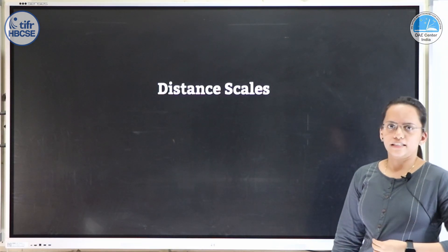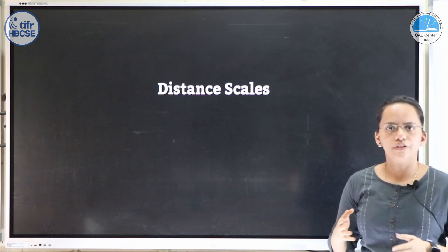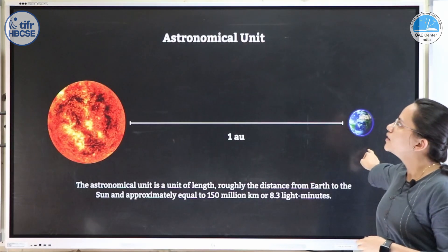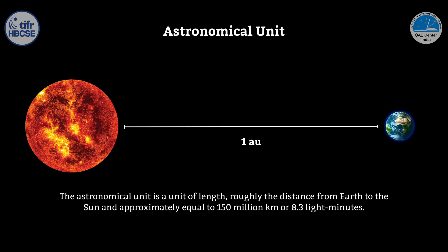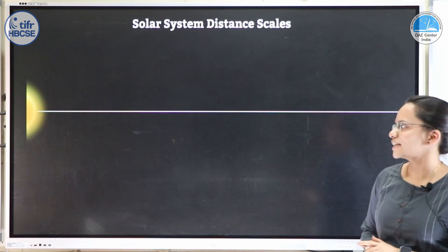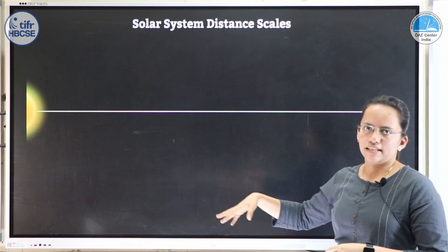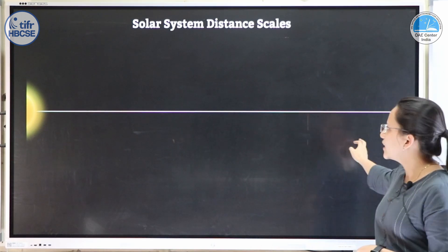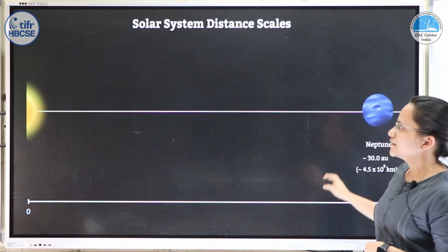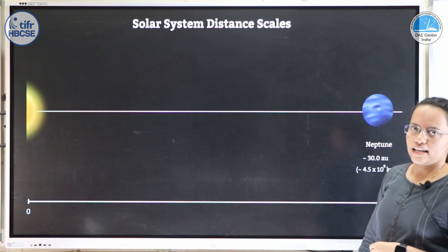Now we come to the distance scale. We have had a rough idea of the sizes of different components in the solar system; now let's see how and where they are situated. The distance between the sun and the Earth is defined as one astronomical unit (AU), approximately equal to 150 million km or 8.3 light-minutes. In this activity, we have the sun at one end and Neptune — the last planet — at the other end, at 30 AU, and we will see what falls roughly at the center of each interval.